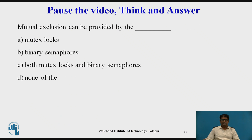Pause the video, think and answer. The answer is C: mutual exclusion can be provided by both mutex locks and binary semaphores.